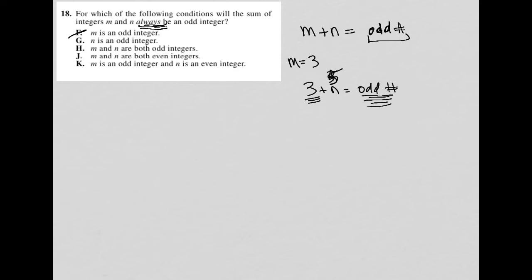So how about choice G? Well, n is an odd integer. I think that we should automatically know, right? If I were to say n is 3, that this should not work for the exact same reasons that m being odd and that being the condition that makes this always true, right? The reason why we determined that m or choice F should be crossed out is the exact same reason that we should decide that G should be crossed out.